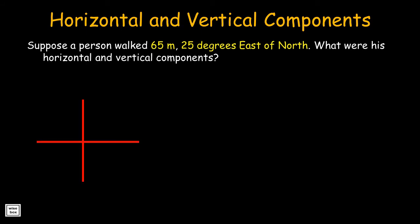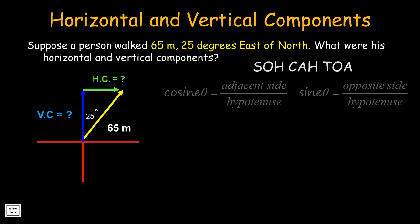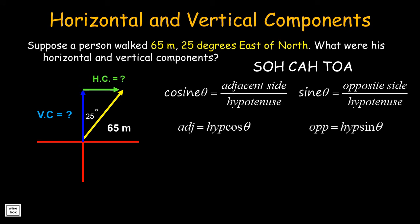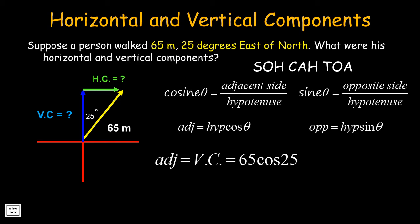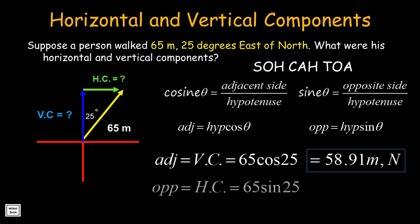Let's try another one. Suppose a person walked 65 meters at 25 degrees east of north. What were his horizontal and vertical components? Using SOH-CAH-TOA, the formula for adjacent equals hypotenuse times cosine theta, and opposite equals hypotenuse times sine theta. In this case, the adjacent which is the vertical component is equal to 65 times cosine 25, resulting in 58.91 meters north. The opposite which is the horizontal component is equal to 65 times sine 25, resulting in 27.47 meters east.